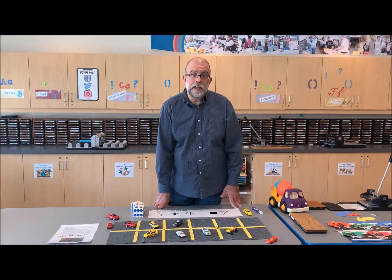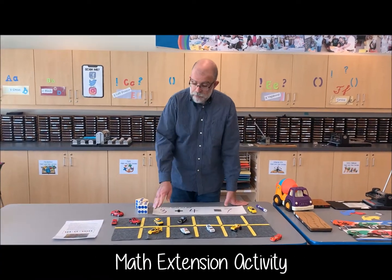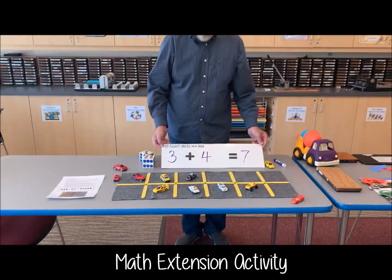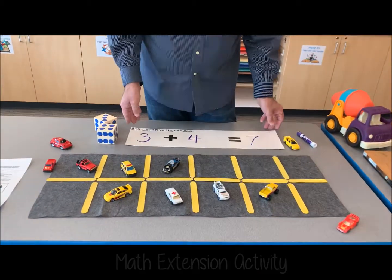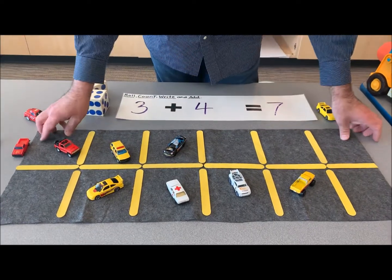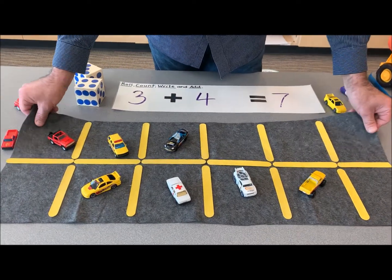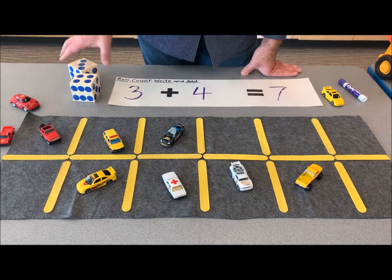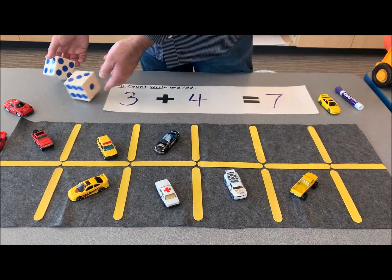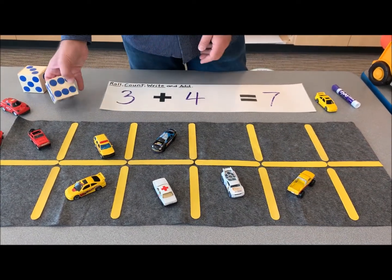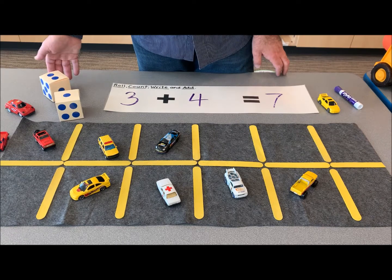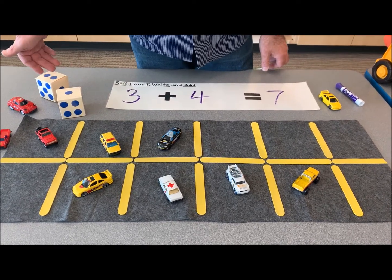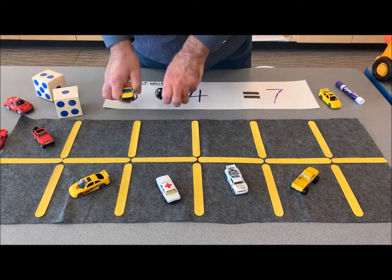I included an extension activity — this is a math activity. It's actually roll, count, write, and add. It's basically a number sentence activity. I got a piece of felt and made a parking lot, and I used cars and dice. The kids can roll according to whatever the numbers and dots are on the die, then use the appropriate cars.